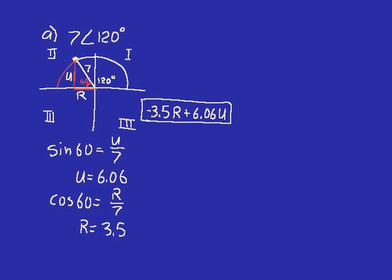That's why it's so important to make a polar coordinate graph of the magnitude and direction and then set up your triangle to figure out your rectangular coordinates. Then you can clearly see what sign your R and U values will have.